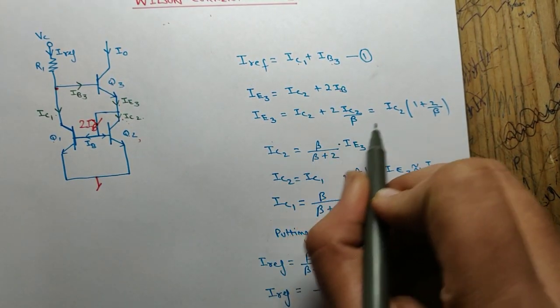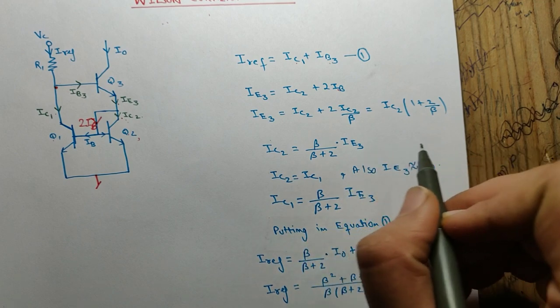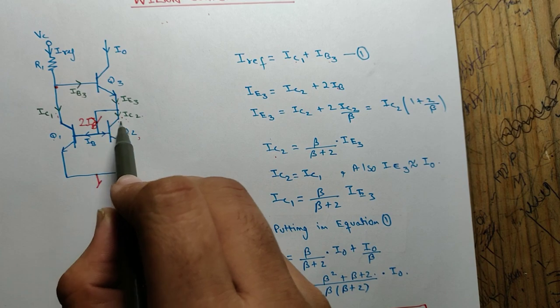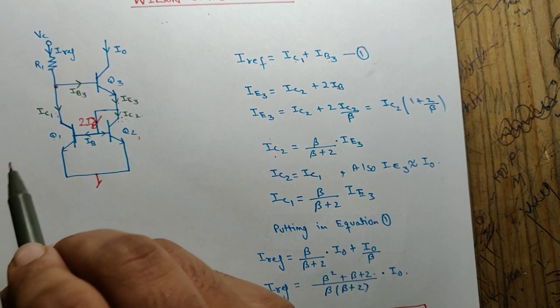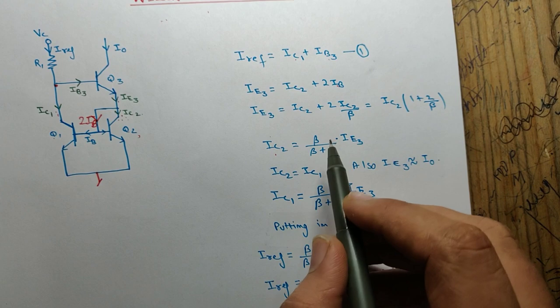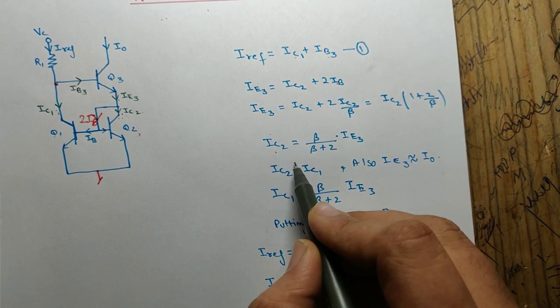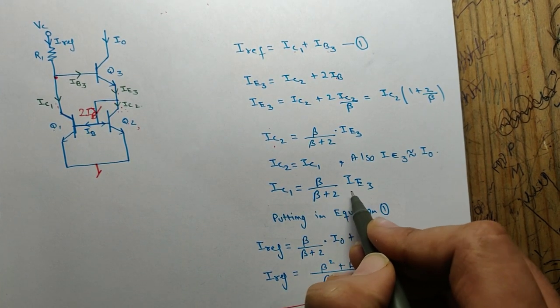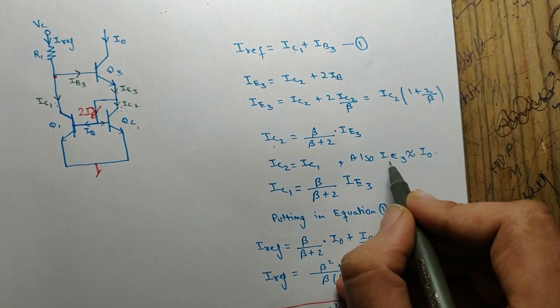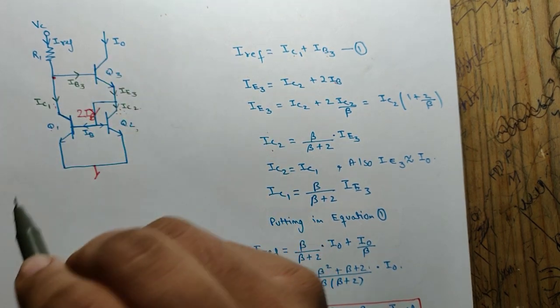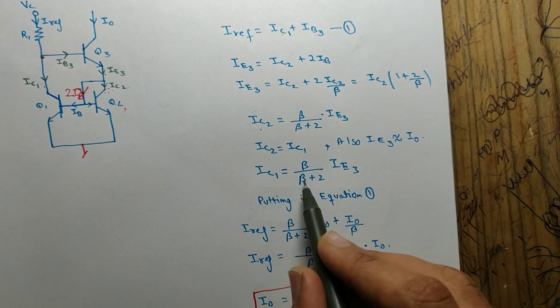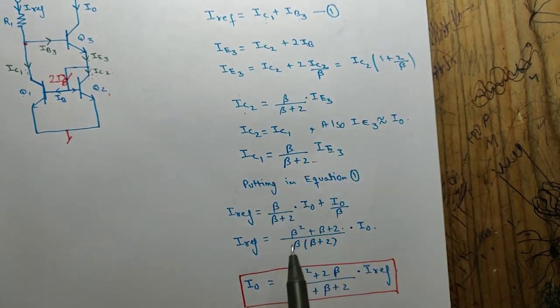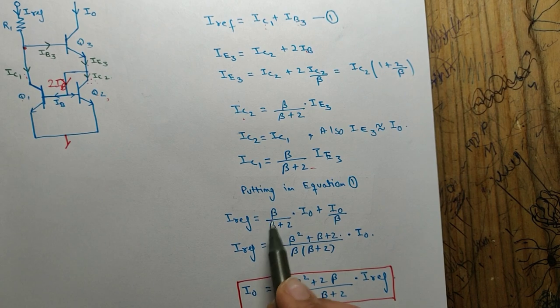ic2 is given by beta upon (beta plus 2) times ie3. Now we already know these two are simple current mirrors, so ic1 is equal to ic2. These two are current mirrors. So I will put this here, so I will get ic1 is equal to beta upon (beta plus 2) by ie3. Now I am assuming ie3 is approximately equal to i0. So I can put this value of ic1 here.